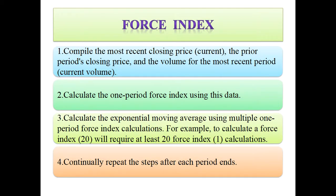First, you'll have to compile the most recent closing price, then the previous period's closing price, and the volume for the most recent period. Then calculate the one-period Force Index using this data. Then calculate the exponential moving average using multiple one-period Force Index calculations. For example, to calculate a Force Index for 20 periods, you will require at least 20 one-period Force Index calculations. Continually repeat the steps after each period ends.